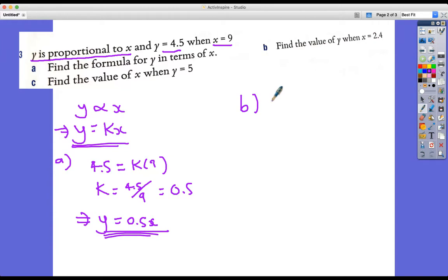So find the value of Y when X is 2.4. Y is equal to 0.5 times 2.4, which equals 1.2.